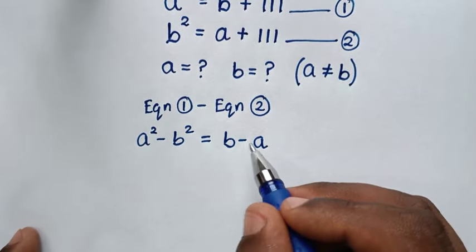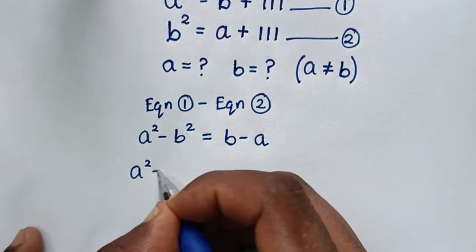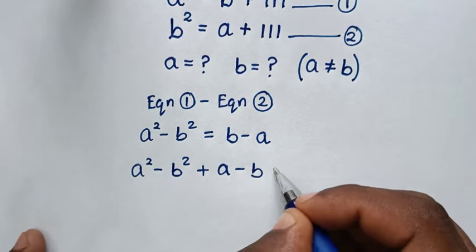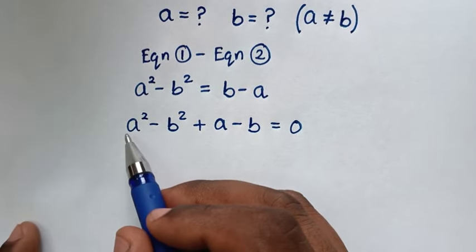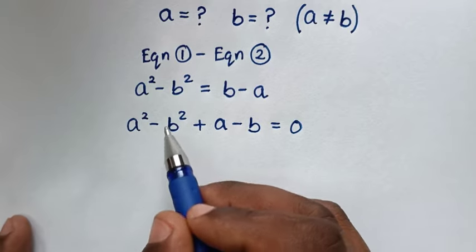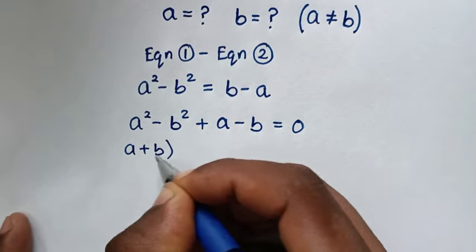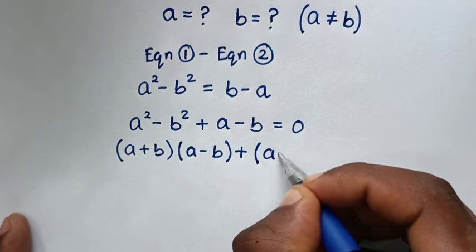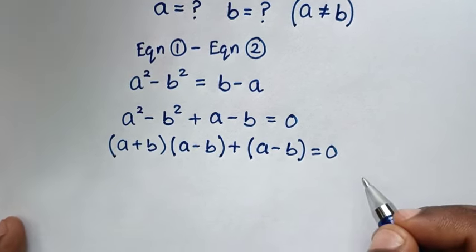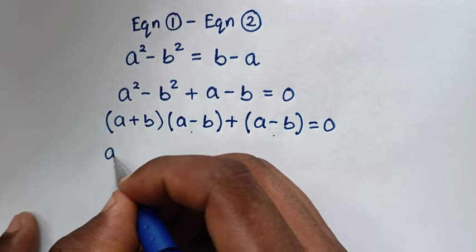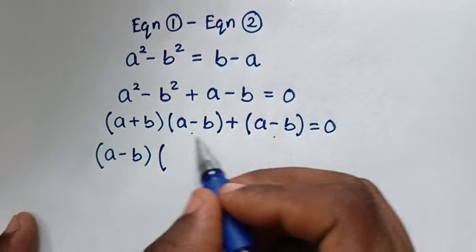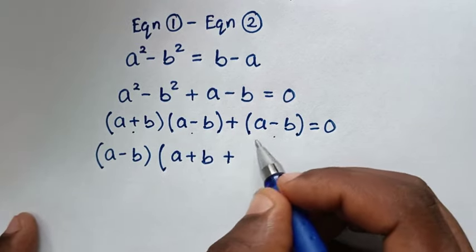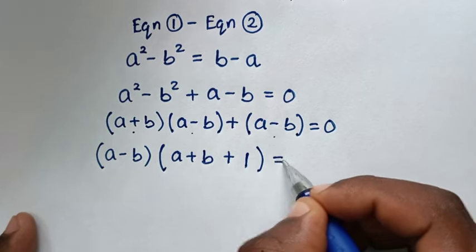Then we'll take the b minus a to the left side. So it will be a squared minus b squared, then negative a takes to this side to be plus a, and b takes to this side to be minus b, equal to 0. Now a squared minus b squared is in the form of a difference of squares, so this is the same as (a+b)(a-b) plus (a-b) is equal to 0.